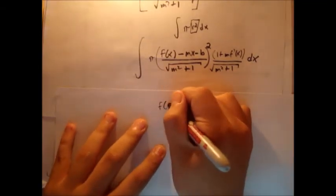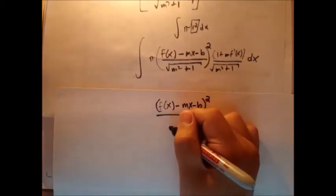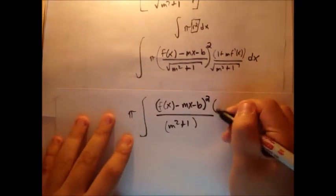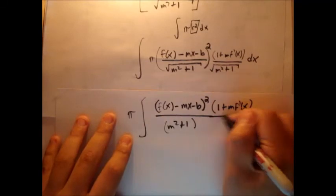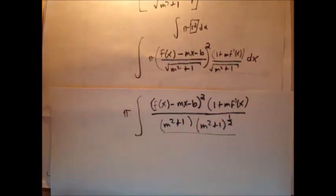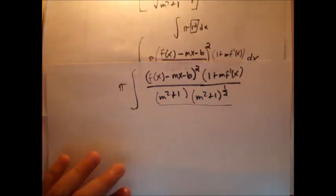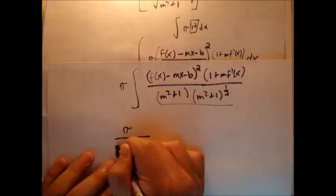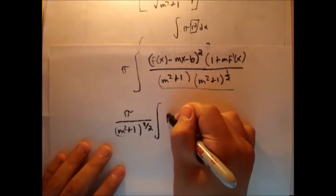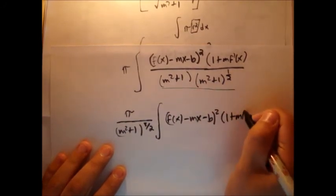So we're left with f of x minus mx minus b squared over, in this case, it'll be m squared plus 1 because the square root is canceled out. Integral of pi times, of course, 1 plus m f prime of x. Oh, we can't cancel that out. But here you notice that we have common terms, m squared plus 1 raised to the half. And this m is going to be a constant. So we can actually remove this out. So if we multiply this together, that's 2 over 2 plus 1 half. That's 3 over 2. We're left with pi m squared plus 1, 3 over 2 times integral of f of x minus mx minus b.